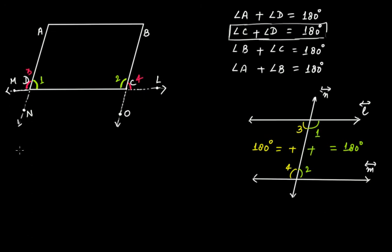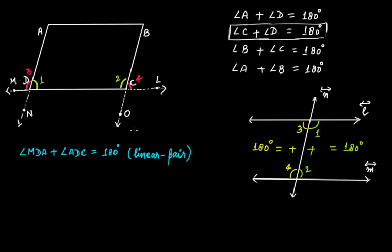Look at this: angle MDA plus angle ADC — they form a linear pair. Therefore, angle MDA plus angle ADC equals 180 degrees because they form a linear pair. We have labeled angle MDA as angle 3 and angle ADC as angle 1, so angle 3 plus angle 1 equals 180 degrees.